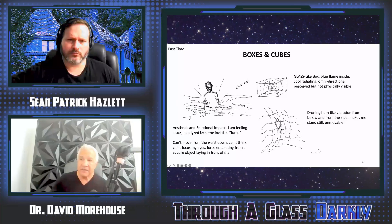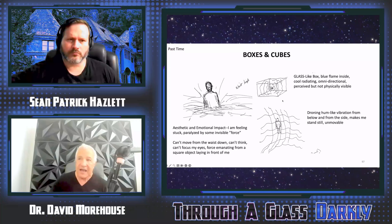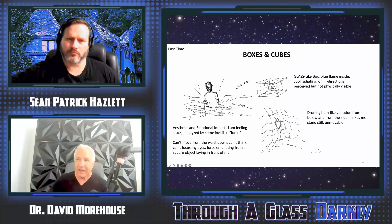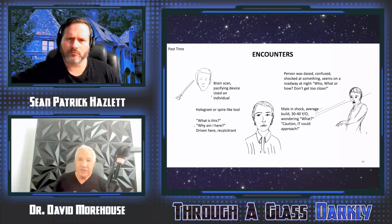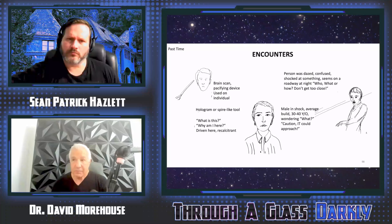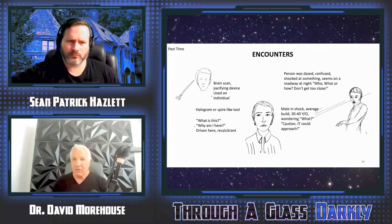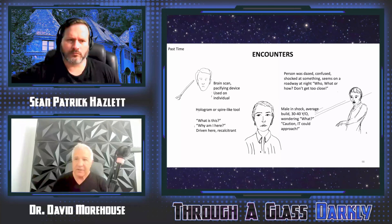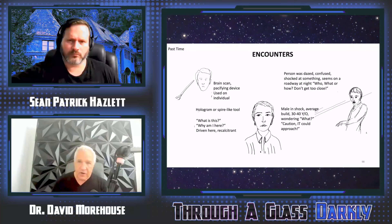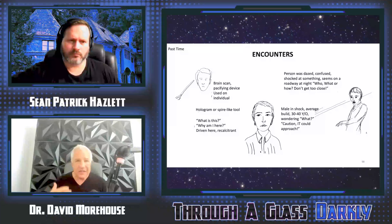The viewer said, 'It feels like I'm in mud, waist high.' That's the viewer interpreting the data — nobody was in mud. That's why it's never 100% accurate: it's subject to human interpretation. The viewer senses people frozen and a box in front of them, which is precisely what the people there claimed happened. Another viewer describes it as a hum-like vibration — 'It makes me stand still and I'm unmovable.' A glass box with a blue flame inside, radiating omnidirectional but not physically visible.